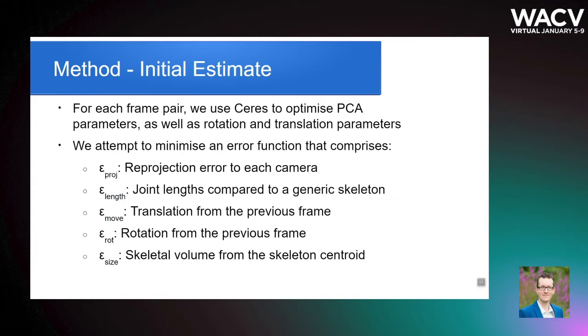To complement this, we add functions epsilon_size, which acts to constrain limbs towards the skeletal centroid, and epsilon_length that regulates the individual bone lengths.